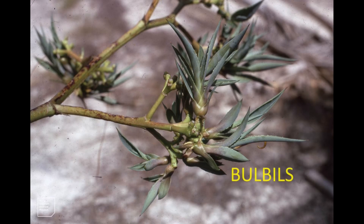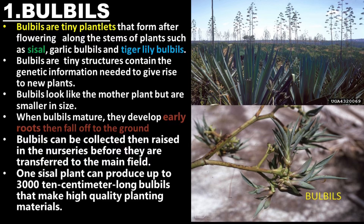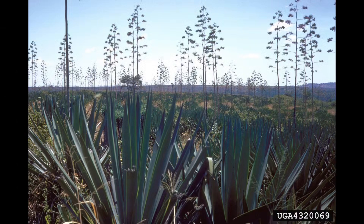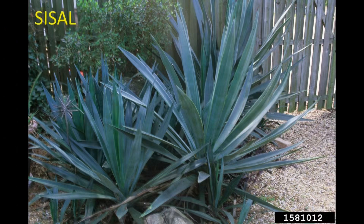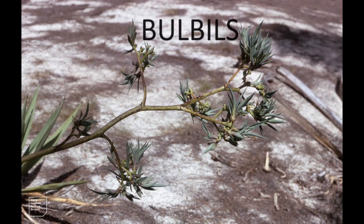Bulbals are tiny plantlets that form after flowering along the stems of plants such as sisal, garlic, and tiger lily. These tiny structures contain the genetic information needed to give rise to new plants. Bulbals look like the mother plant but are smaller in size.